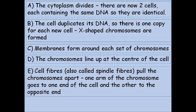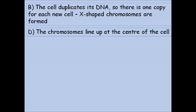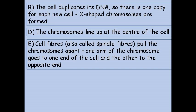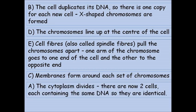Now we've gone through mitosis. The first thing that happens is the cell duplicates or replicates its DNA, so now we have X-shaped chromosomes. These chromosomes line up along the centre of the cell. Spindle fibres then pull the chromosome arms apart — one arm goes to one end of the cell and the other to the other end, and we sometimes call these arms chromatids. Membranes then form around each set of chromosomes, and then finally the cytoplasm divides, so we now have two genetically identical cells.